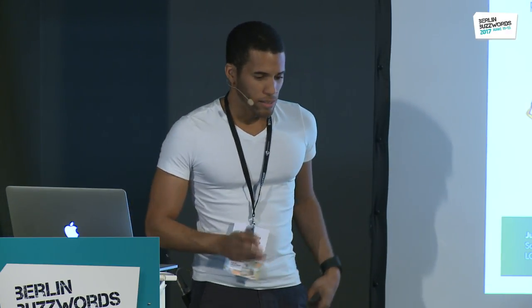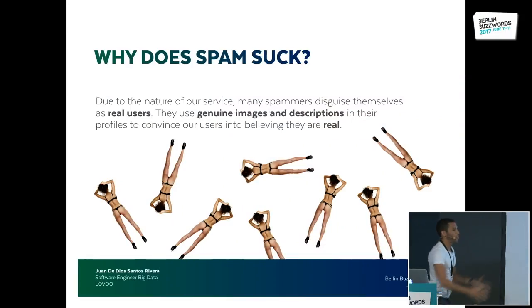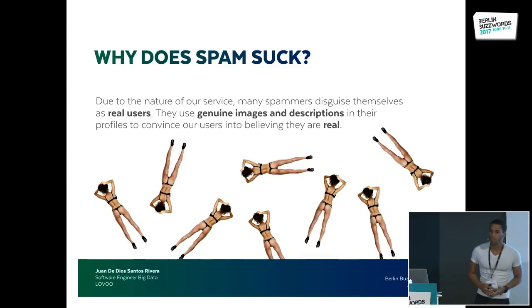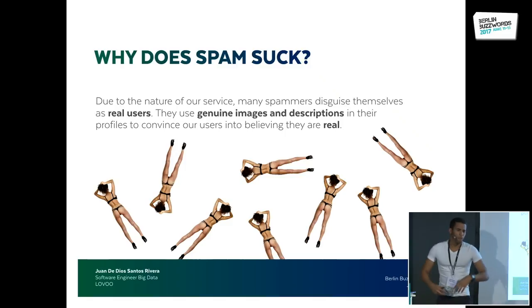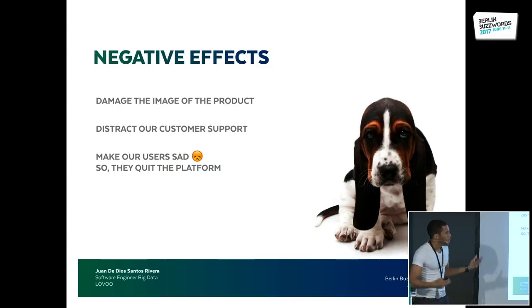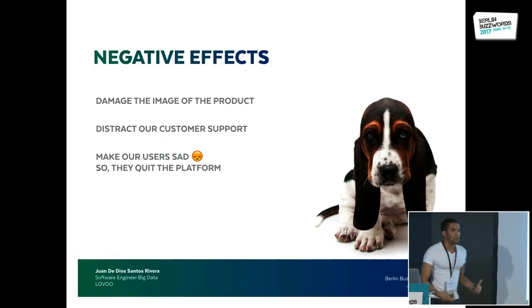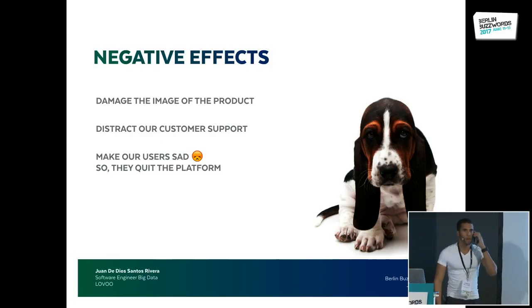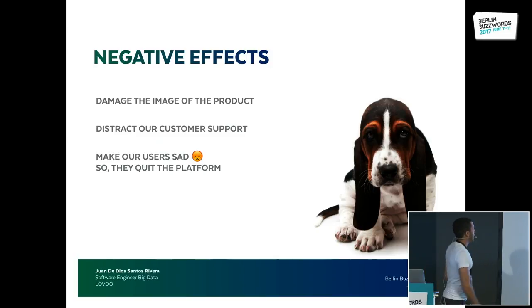This sucks, because we are a dating app — people are trying to find other real users who want to spend time with them. These spammers are getting in the way of that because they use genuine images in their profiles and really good descriptions to lure users into believing they are real. For example, imagine it's Friday night and you get a really good match, start talking, and then — boom — spammer. This damages the product image, distracts customer support, wastes time and money, and makes users sad, so they quit the platform.